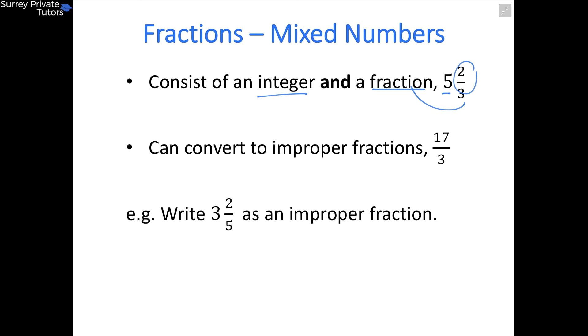Now let's look at how to convert from a mixed number to an improper fraction. Here we have: write 3 and 2/5 as an improper fraction. Three wholes equals 3 lots of 5/5, because 1 whole equals 5/5. So 3 wholes equals 15/5.